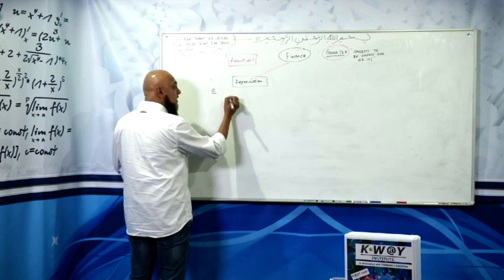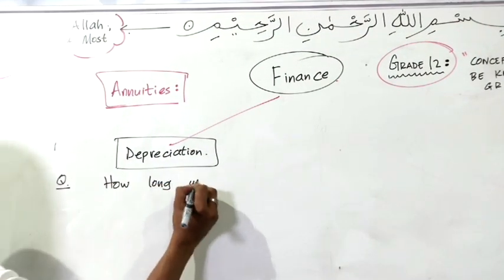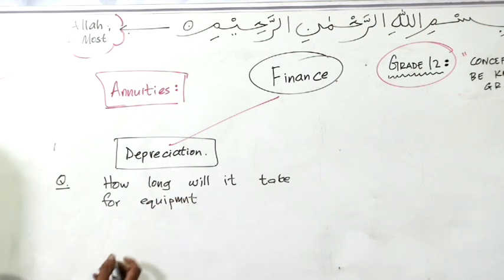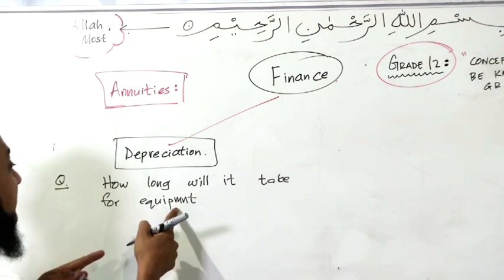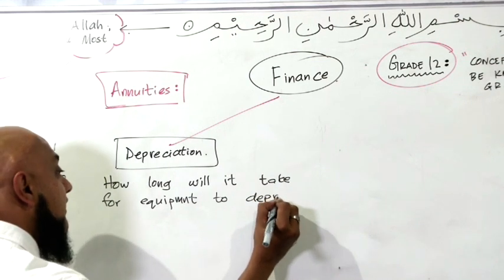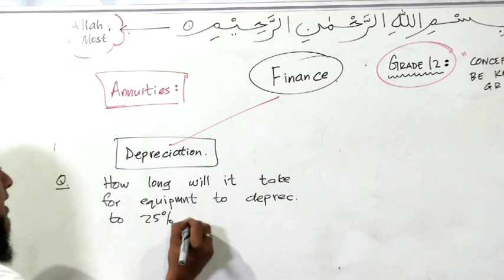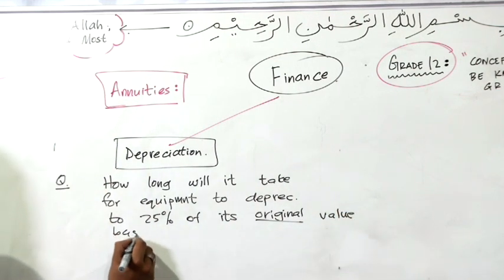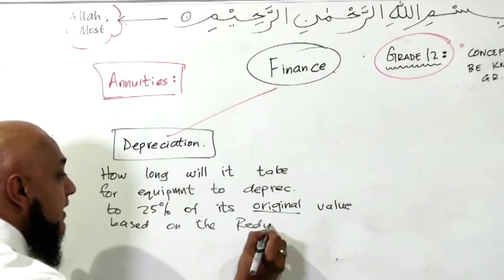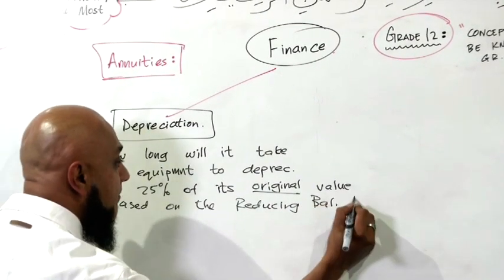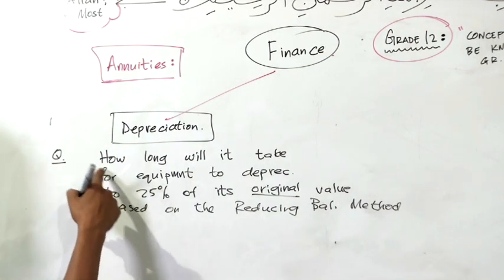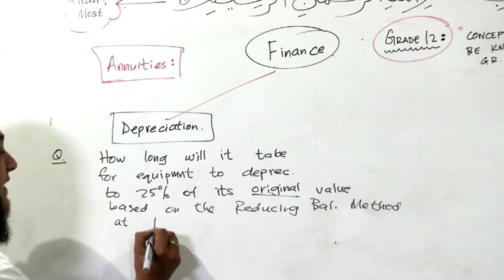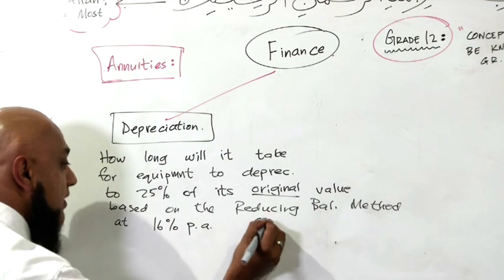We will say, let us say question in the exam, it would say: how long will it take for equipment, remember this is mathematics not English so I am not going to be criticised on the way I write, how long will it take for equipment to depreciate to 25% of its original value, based on the reducing balance method at 16% per annum, and that would be 6 marks.